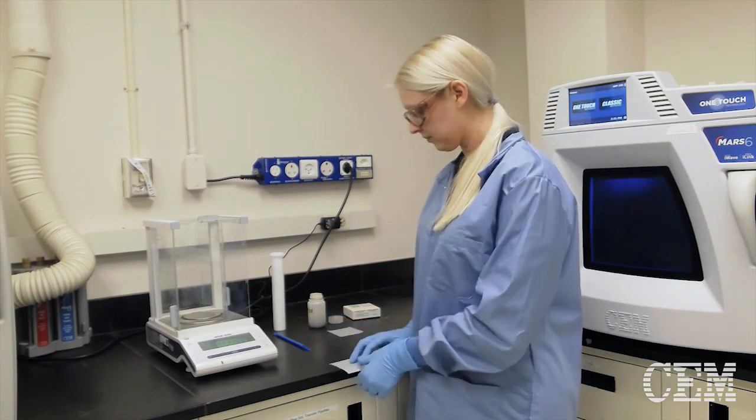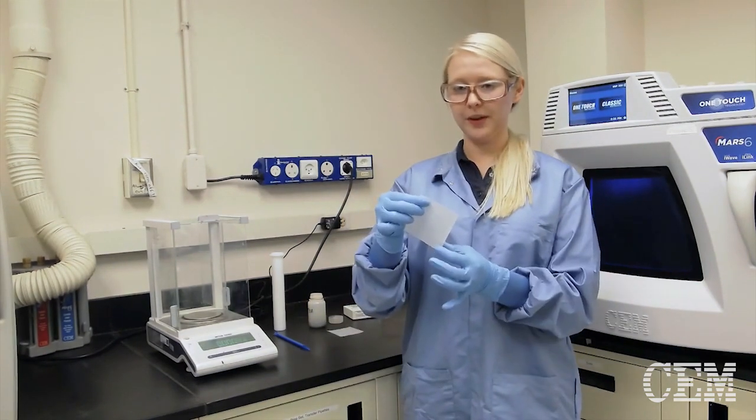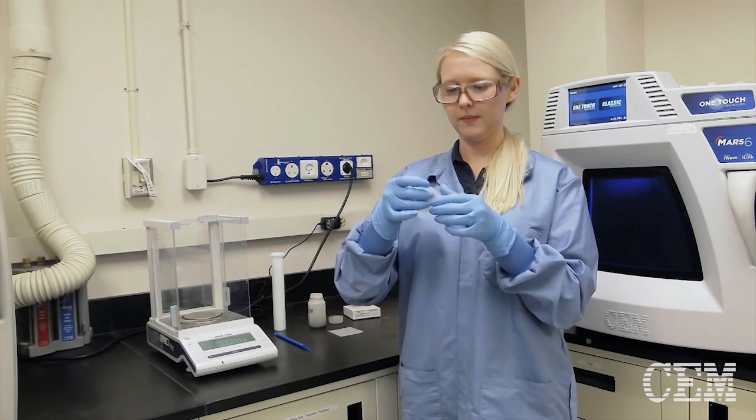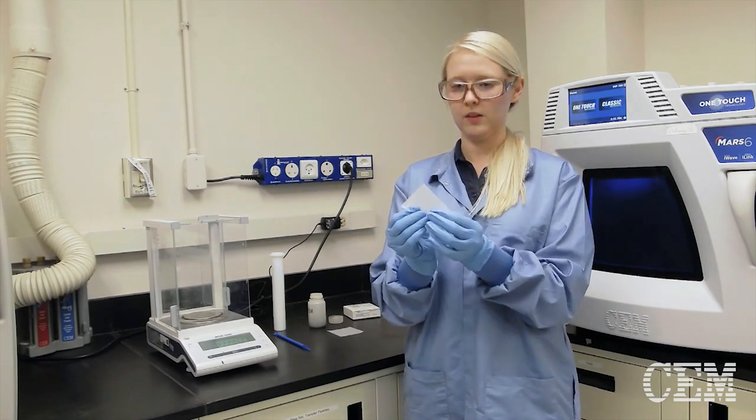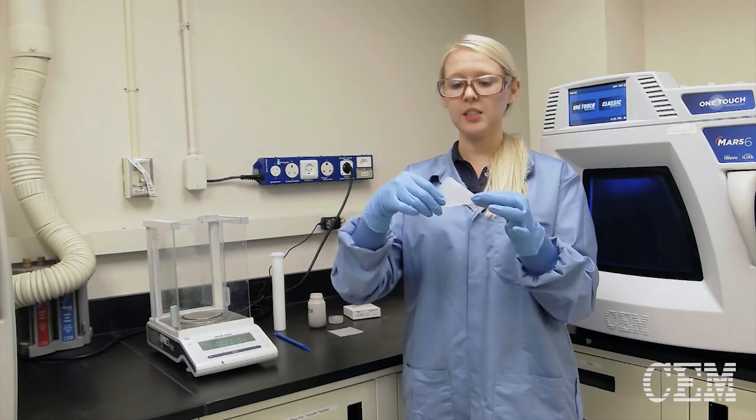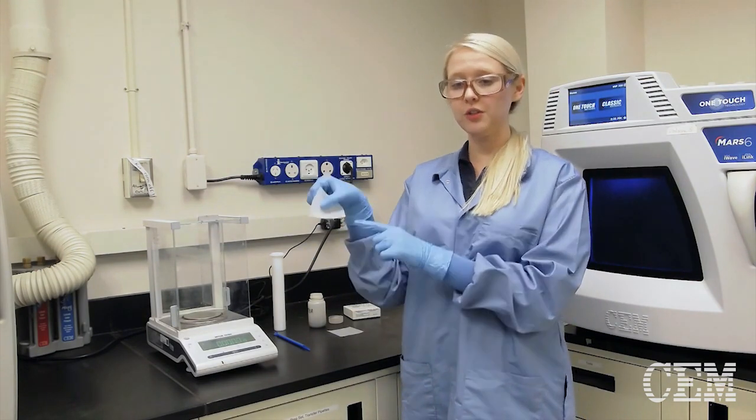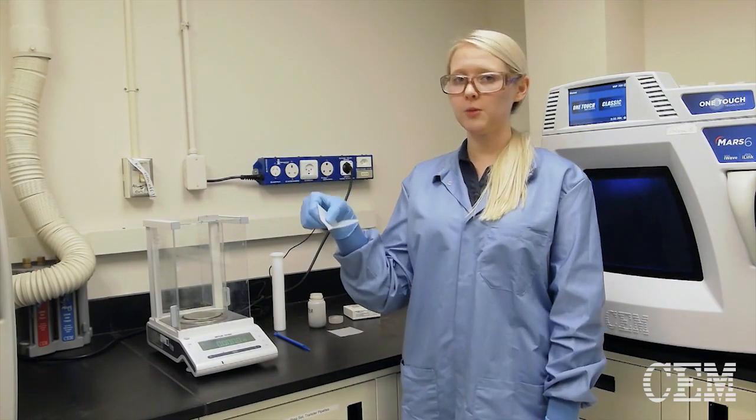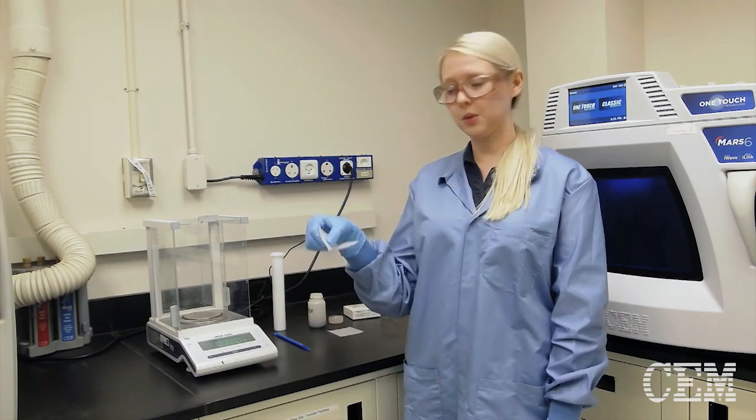First, I'm going to take a weigh paper and fold it in half this way. So it gives me a triangle shape. This makes it easier to weigh onto the sample, but pick it up to make it easier to transfer to my vessel.